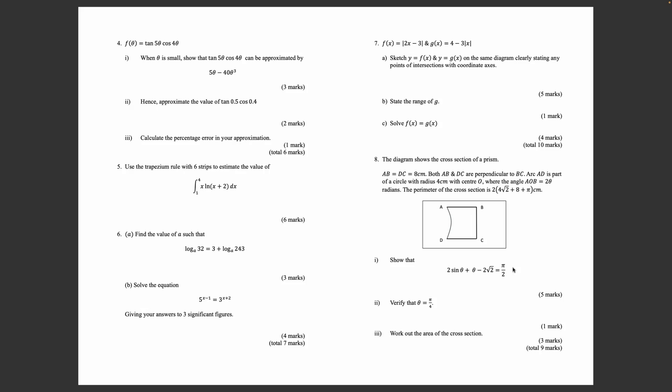Arc AD is part of a circle with radius 4 centimeters with center O, where angle AOB is 2θ radians. The perimeter of the cross section is 2(4√2 + 8 + π) centimeters. Show that 2sin(θ) + θ - 2√2 = π/3. Verify that θ = π/4. Work out the cross section area of the prism.